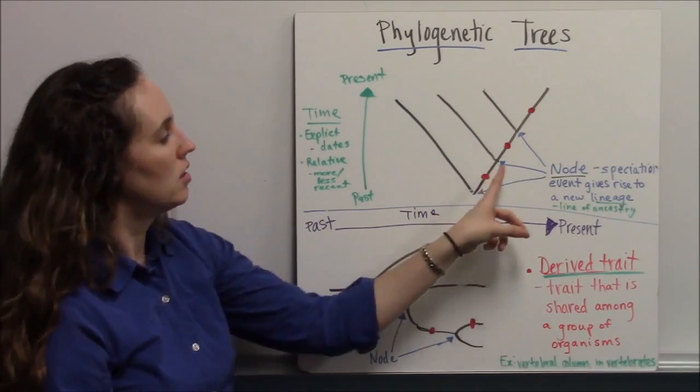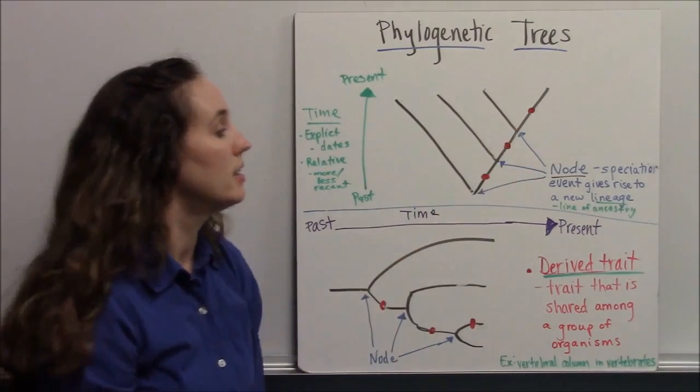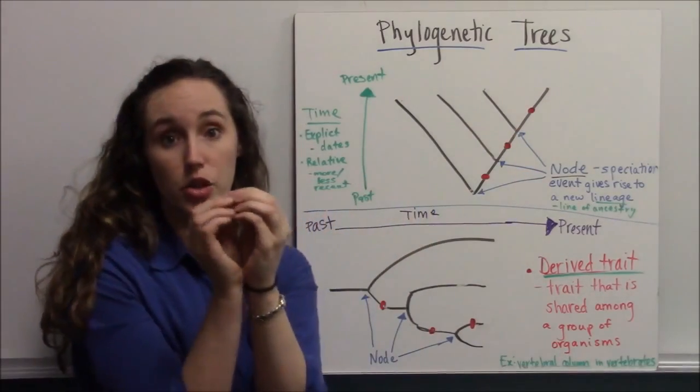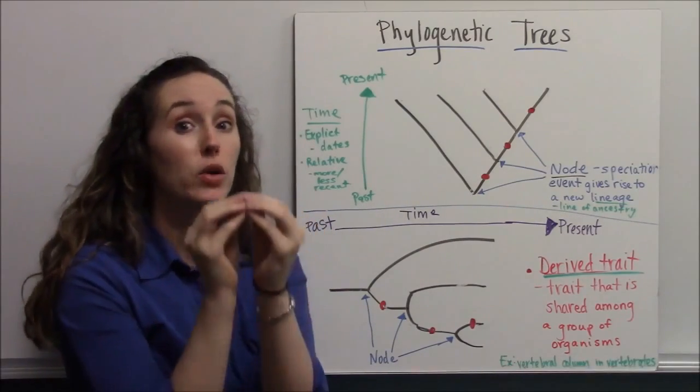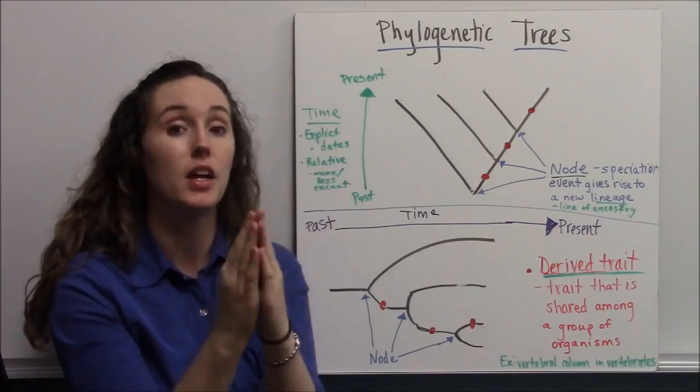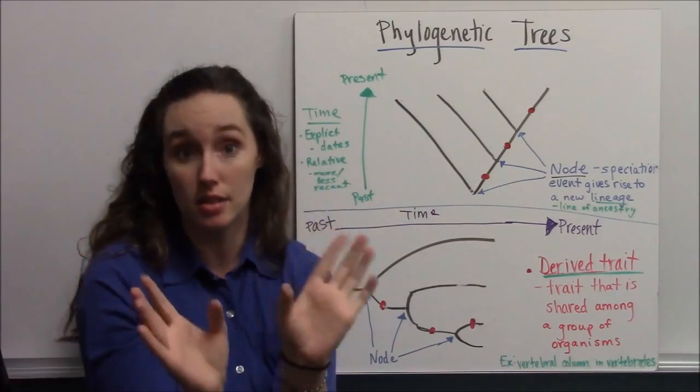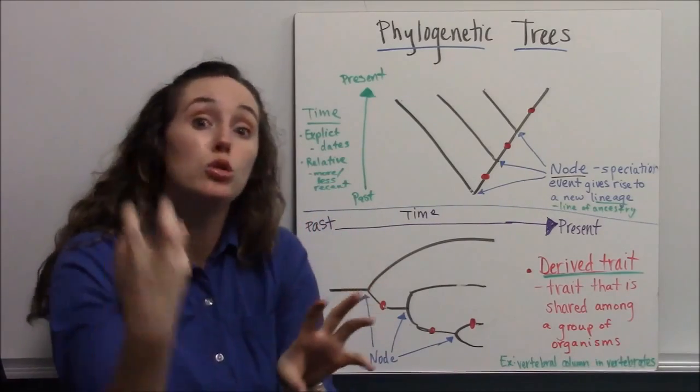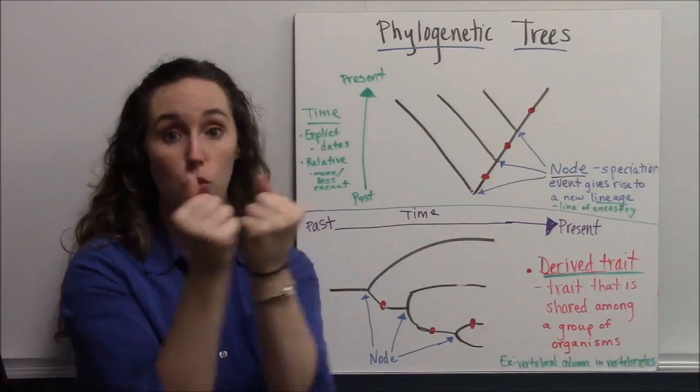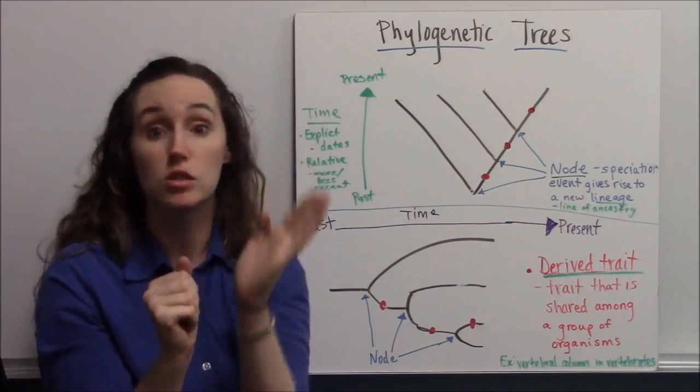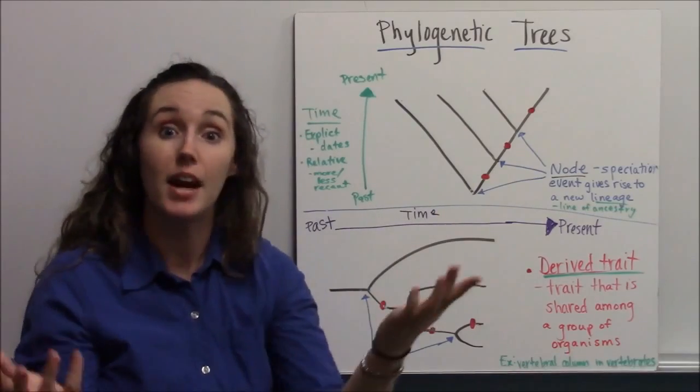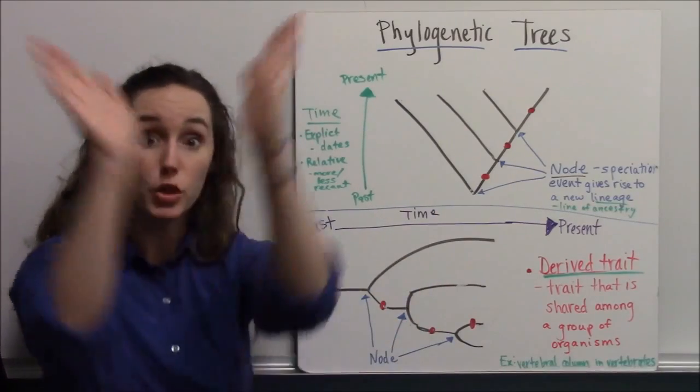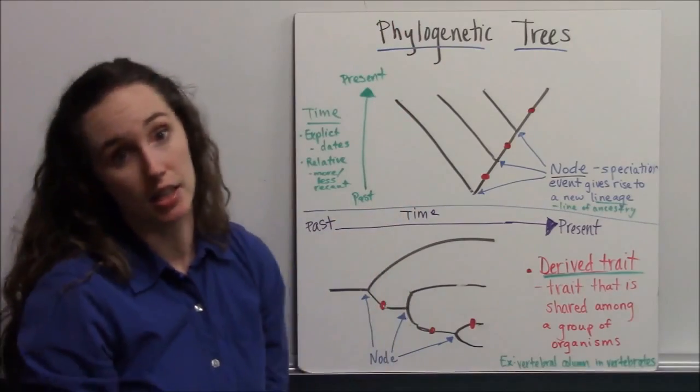Each of these forks is a common ancestor at a speciation event. So a time in which some barrier has come along and the organisms are reproductively isolated from one another, some new derived trait has appeared in one of the populations, and it's so different that they can no longer reproduce and have viable fertile offspring. So you have a split in the lineage.